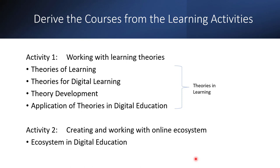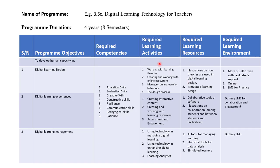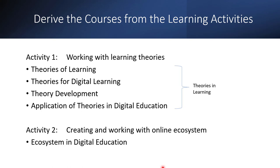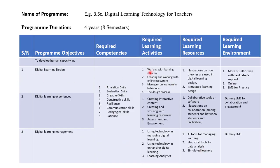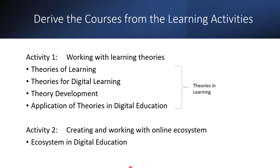Now, once you've done that, the next step is to derive the courses from the learning activities. The learning activities are the things you're going to do that will help you achieve the program objective. The program objective has a purpose, a gap to fill, and challenges identified. From the learning activities, we will generate the courses. Let's take activity one as an example: working with learning theories.